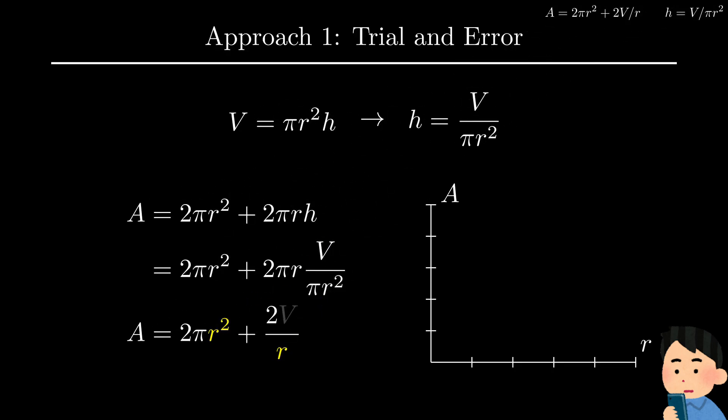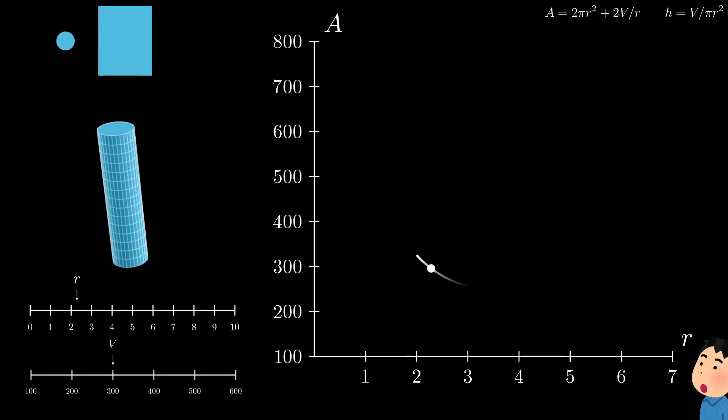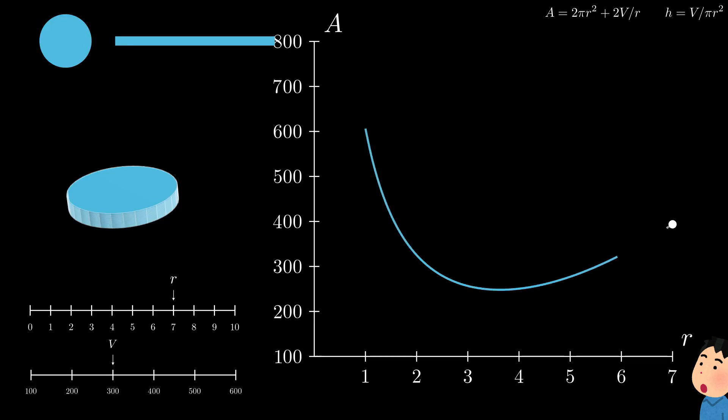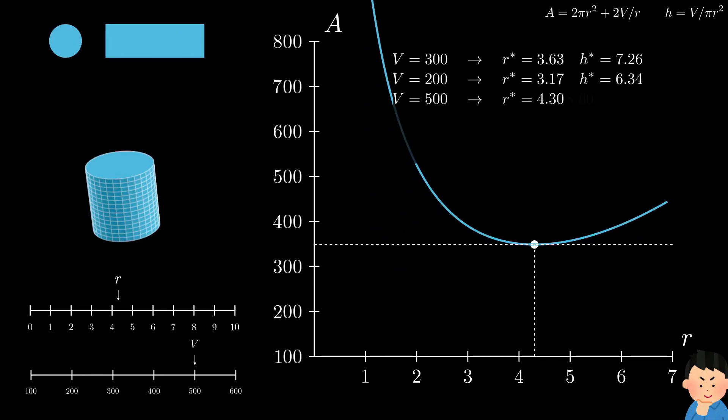Next is to get back to experimenting. First, we need to decide on the value of V. Here, we just choose 300. And then we throw in a bunch of different values of R into the surface area equation. See that we get a nice curve from that. And the curve tells us that the can with a radius equal to 3.63 has the minimum surface area for this case. We then use this to calculate the height. Once we are done, we just repeat the whole experiment with different values of V, and write down the result.